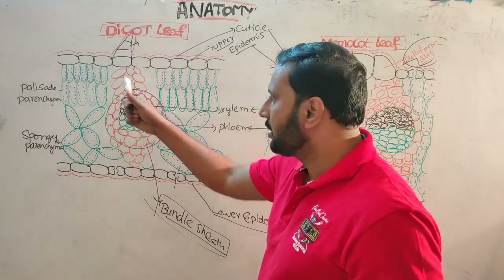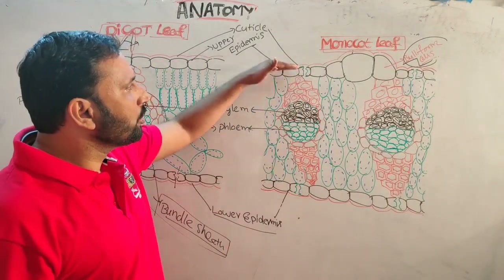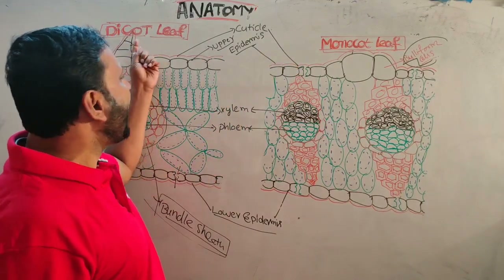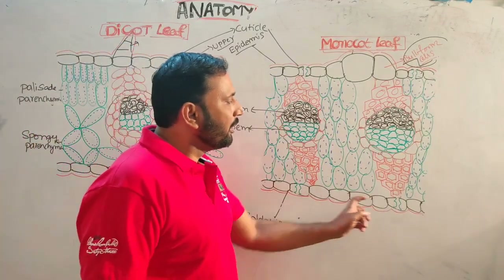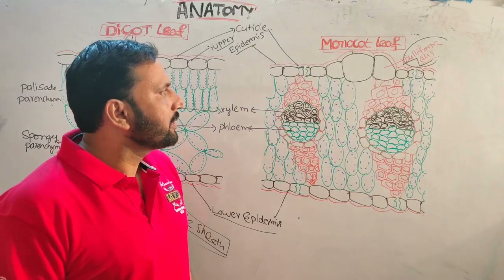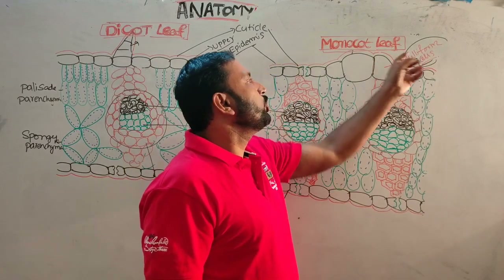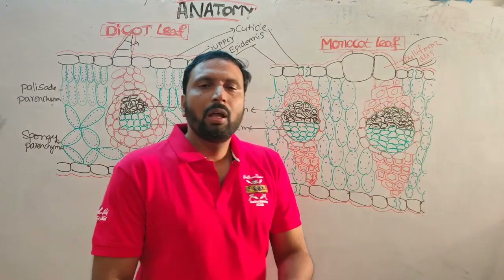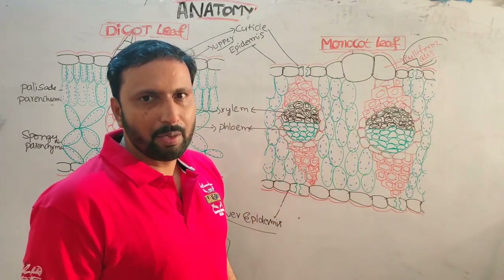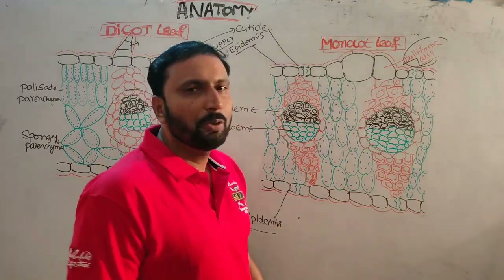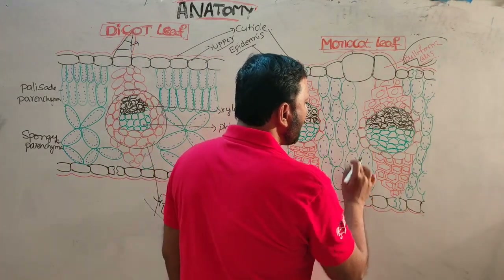In monocot leaf, the upper and lower epidermis both have cuticle, but hair is absent. Stomata are equally distributed on both upper and lower epidermis. Some grasses have bulliform cells — thin, bulged cells containing water, helpful for rolling and unrolling of leaves. Mesophyll cells between upper and lower epidermis may or may not differentiate into palisade and spongy parenchyma.